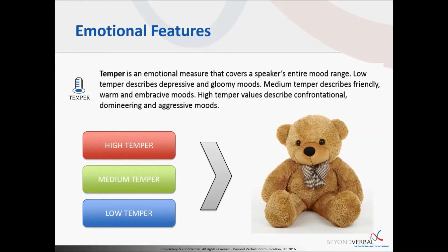It's a basic output but with a lot of value, and it can be integrated into many different applications. For example, you could have a toy or application that, based on the temper score, could change colors or send a notification — so when your child is sad while playing, the toy's color could turn blue, or you'd get a blue notification on the app.